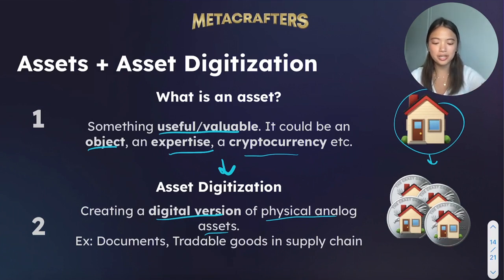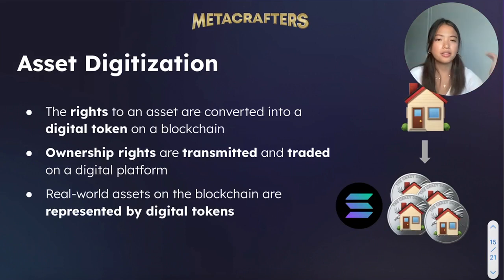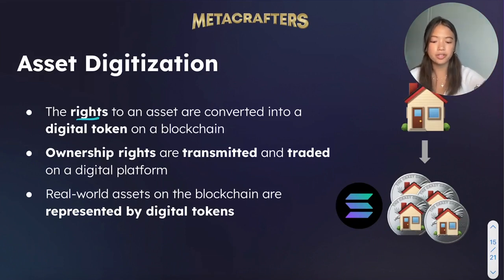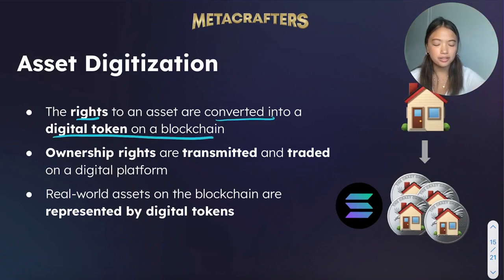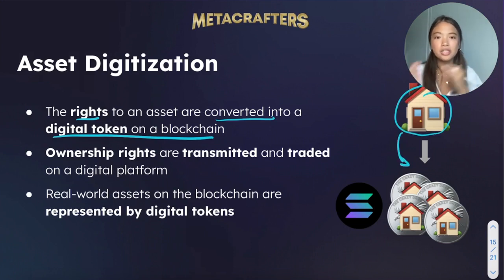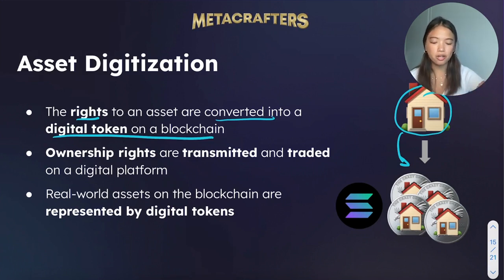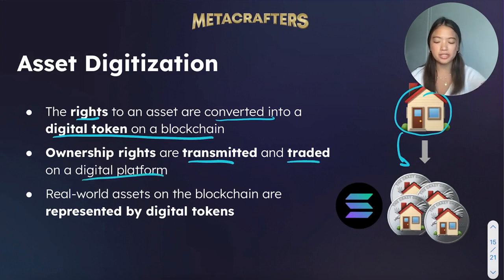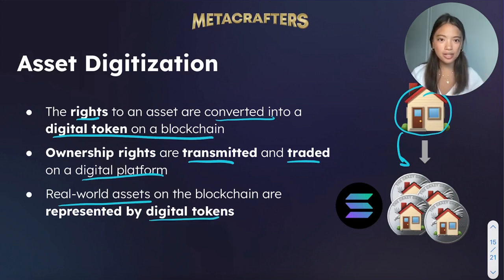What does asset digitization mean in a more blockchain context? In asset digitization, the rights to an asset are converted into a digital token on the blockchain. For example, we can imagine that the rights to this house are converted into digital tokens, so that when we want to change ownership or interact with the owners, these ownership rights are transmitted and traded on a digital platform. In summary, we are representing real-world assets by tokens on the blockchain.